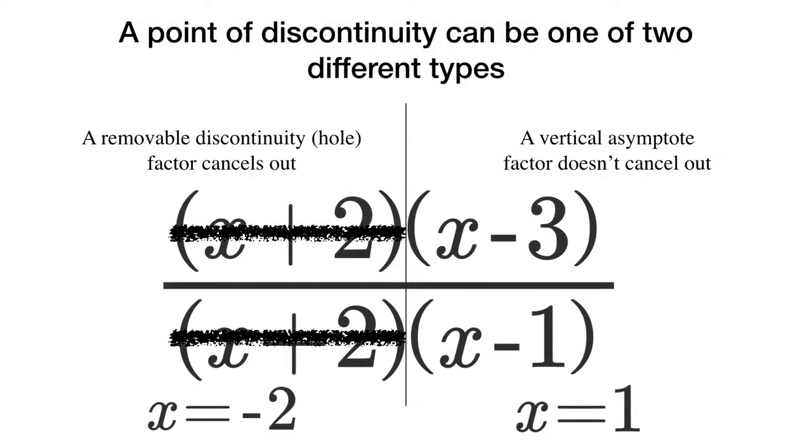Now there are actually two types of discontinuities. One we have the removable discontinuity or a hole and that's whenever we have a factor that would cancel out like the x plus 2 on this slide. The second type is a vertical asymptote and that is a factor in the denominator like x minus 1 that doesn't factor out.